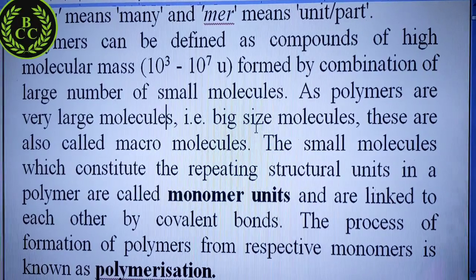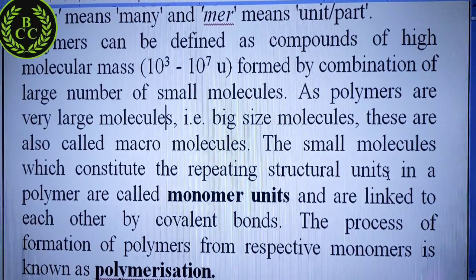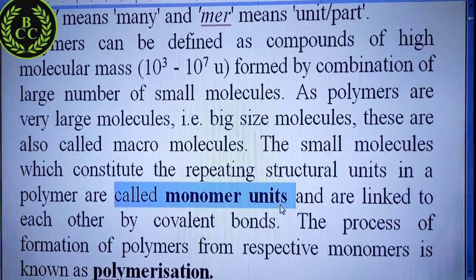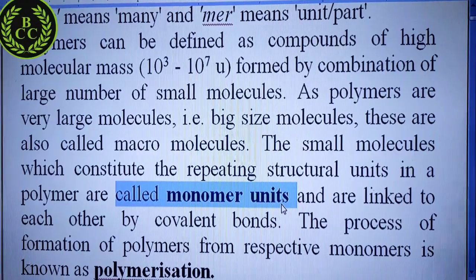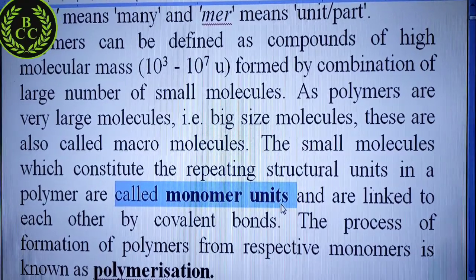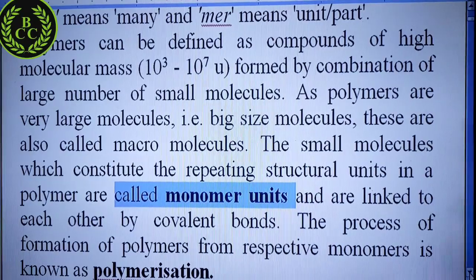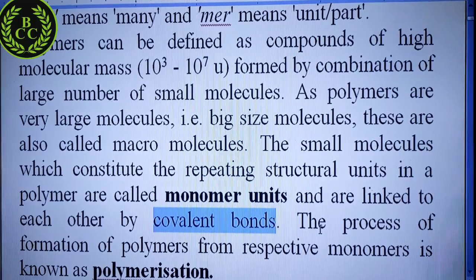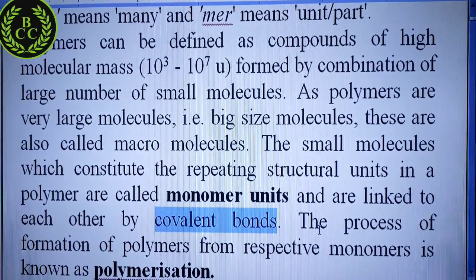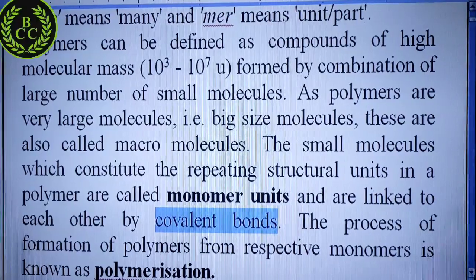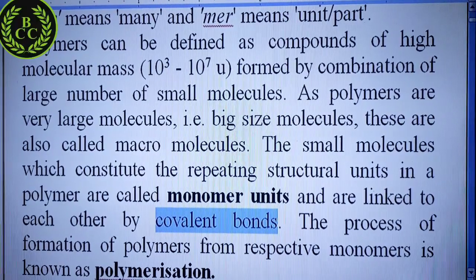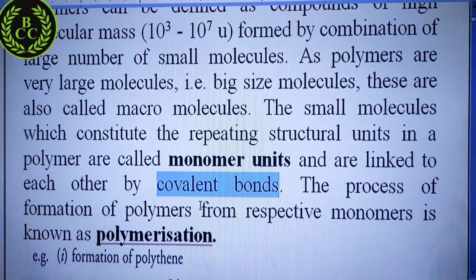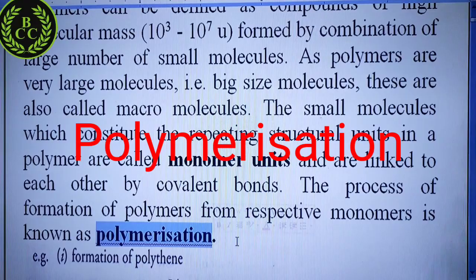The small molecules which constitute the repeating structural unit in the polymer are called monomer units. Those small molecules which repeat repeatedly to form a big molecule — the process of formation of a polymer from the respective monomers is known as polymerization.